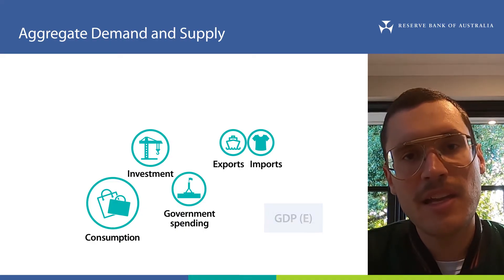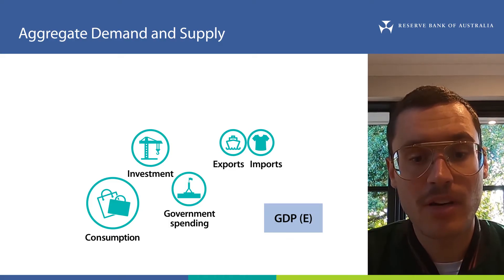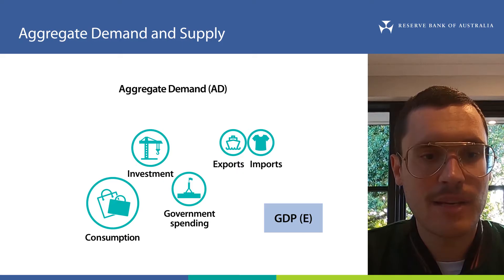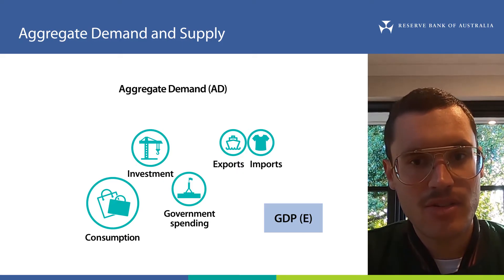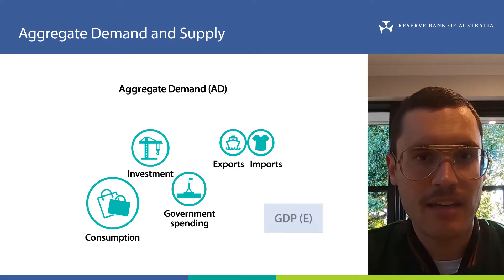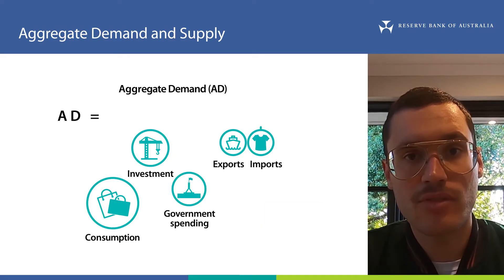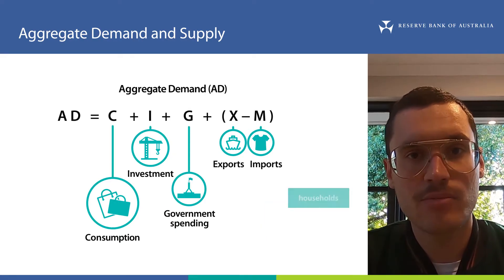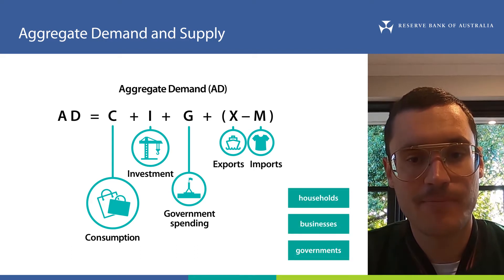Now GDP is a statistical estimate of a concept economists call aggregate demand. Aggregate in this instance means total. Think of aggregate demand as the total amount of Australian goods and services purchased by Australian households, businesses and governments over a period of time.